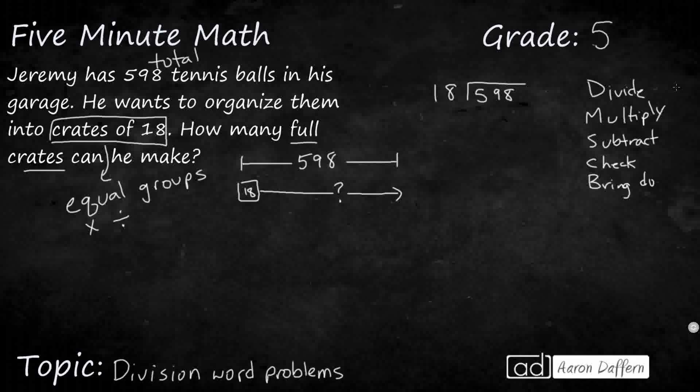So can 18 go into this first group of 5? No, but 18 can go into 59. How many 18s will go into 59? I'm not sure. I don't know my 18s. But I don't think it's going to be very many. So 18 plus 18, that's going to get me 36. If I add another 18, that's going to give me 54. Okay, so that's really close. So I've got 1, 2, 3 18s. So 18 goes into 59 three times.